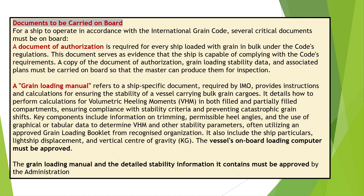For a ship to operate in accordance with the International Grain Code, several critical documents must be on board. A document of authorization is required for every ship loaded with grain in bulk, serving as evidence that the ship is capable of complying with the code's requirements. A copy of the document of authorization, grain loading stability data, and associated plans must be carried on board. The grain loading manual is a ship-specific document required by IMO that provides instructions and calculations for ensuring the stability of a vessel carrying bulk grain cargoes, including calculations for volumetric heeling moments, VHM, in both filled and partially filled compartments, ensuring compliance with stability criteria and preventing catastrophic grain shifts.